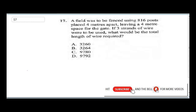Question 17 says: a field was to be fenced using 816 posts placed four meters apart, leaving a four meter space for the gate. If three strands of wire were to be used, what would be the total length of wire required? The first thing we need to do is work with 816 posts placed four meters apart.